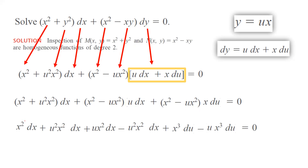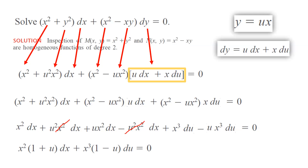Now you have x squared dx plus u squared x squared dx, plus x squared u dx minus u squared x squared dx, plus x cubed du. We can look for opposite terms — u squared x squared and negative u squared x squared dx cancel out. Simplifying further, we get x squared times (1 plus u) dx plus x cubed times (1 minus u) du equals 0.